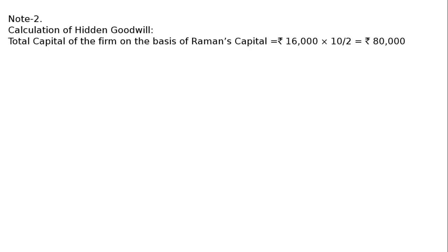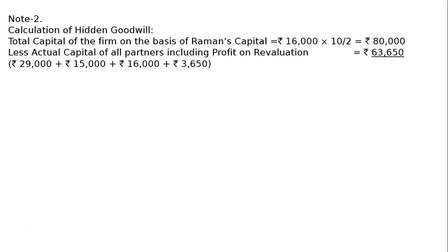Working Note 2: Calculation of hidden goodwill. Goodwill is not given and will be valued on the basis of Raman's capital contribution. Total capital of the firm is calculated based on Raman's capital — Raman is contributing Rs. 60,000 for a 2/10 share. Reversing the ratio: 10/2 gives a total expected capital of Rs. 3,00,000... Less actual capital: Rajesh Rs. 29,000, Ravi Rs. 15,000, Raman Rs. 16,000, plus revaluation profit Rs. 3,650.